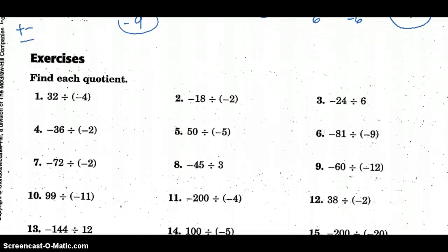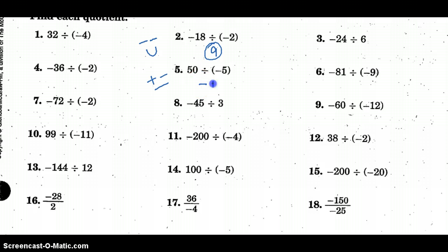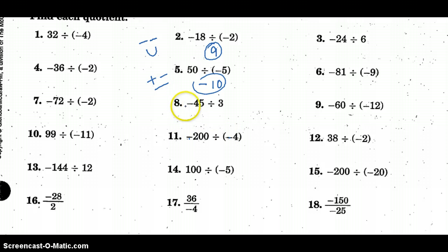Let's go to the middle column. Same signs — so they're going to be positive. 18 divided by 2 is positive 9. Here I have opposite signs — a positive and a negative — so negative outcome: negative 10. 50 divided by 5 is 10, and it's negative because of the signs. An even number of negatives makes a positive answer; an odd number makes a negative answer.